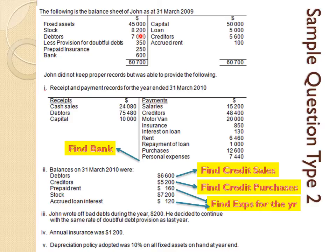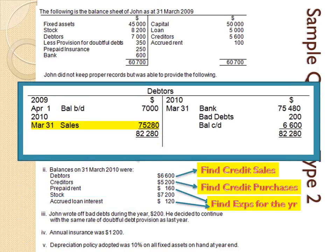Take the debtor opening balance, the debtor closing balance of $6,600, the money debtors paid you of $75,480 — so they owe you less — and bad debts of $200 which also reduces debtors. The debtors control account shows: opening $7,000, closing $6,600, debtors paid $75,480, bad debts $200. Working backwards gives credit sales of $75,280.